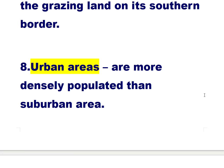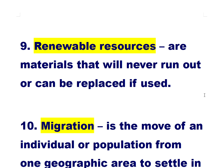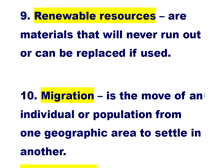Number eight: urban areas are more densely populated than suburban areas. Number nine: renewable resources are materials that will never run out or can be replaced if used — examples are air and water. Number ten: migration is the movement of an individual or population from one geographic area to settle in another.